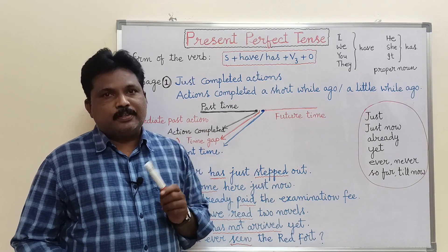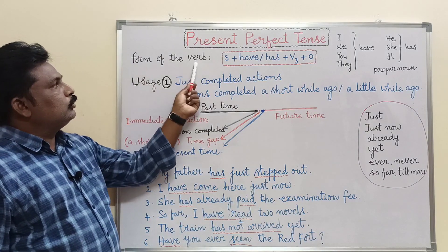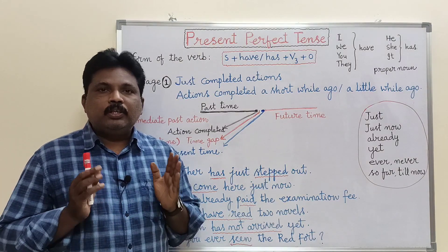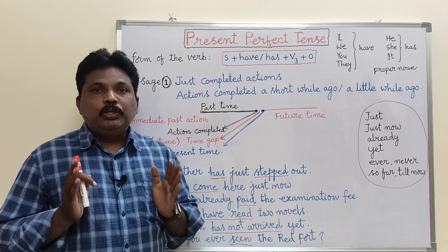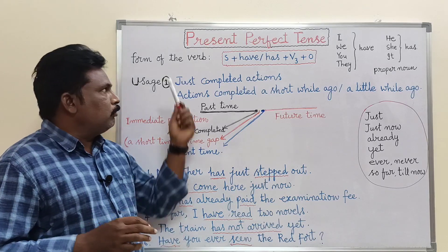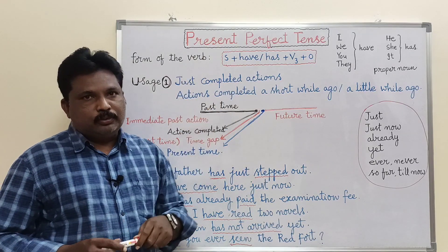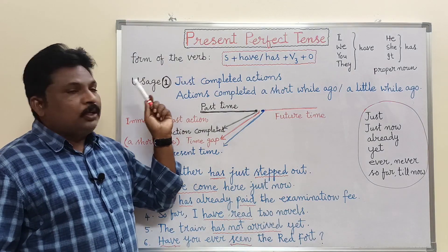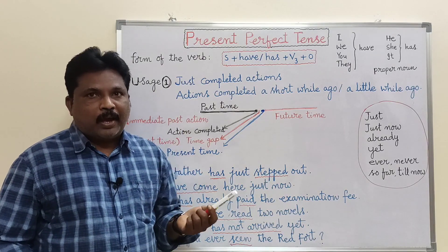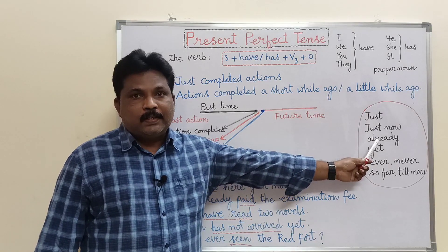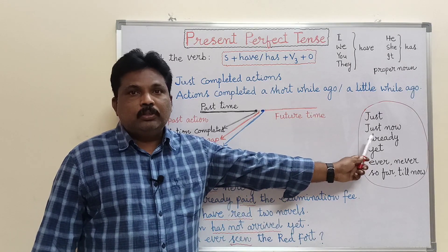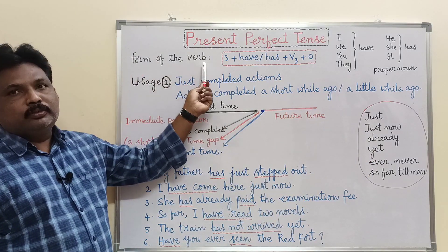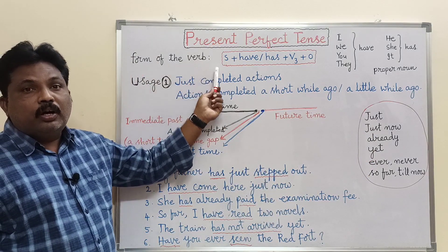What is the form of the verb of present perfect tense? Remember, for each and every tense you need to remember three things: number one, the form of the verb or the structure of the verb; number two, the usage or the time of action; and number three, the time indicators which are used with a tense.